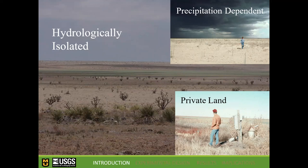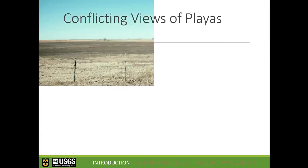Most playas exist on private land, which is a contrast to Missouri where more wetlands are publicly owned along floodplains. Studying precipitation change impacts on a Great Plains playa is simpler than a Missouri floodplain wetland because playas only receive inputs from precipitation. Most of the year, playas look dry — but that's actually an important part of the playa life cycle.